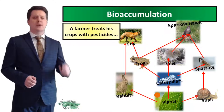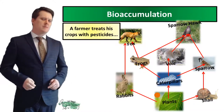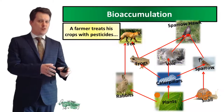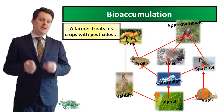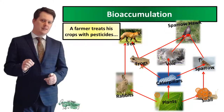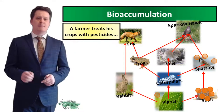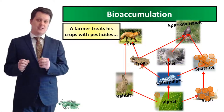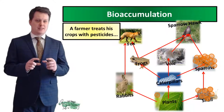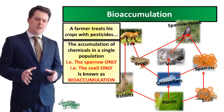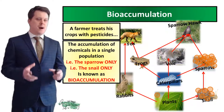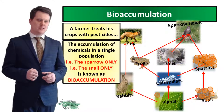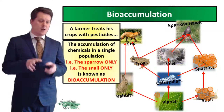Next we're going to have a look at something called bioaccumulation. A farmer treats his crops with pesticides — we're going to be representing this pesticide with orange dots. When the snail begins to eat the plant, that pesticide is also transferred to the snail. Over the course of that snail's lifetime it's going to be consuming a lot of pesticide, which could ultimately kill it. Now if our sparrow were to eat that snail — or eat a dead snail poisoned by the pesticide — that pesticide will be transferred to the sparrow. Over the course of the sparrow's lifetime it's going to eat a lot of these pesticide-contaminated snails, and that pesticide is going to build up. This accumulation of chemicals in a single population is known as bioaccumulation.